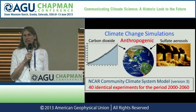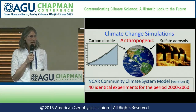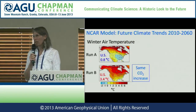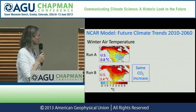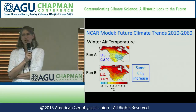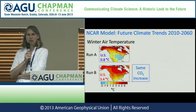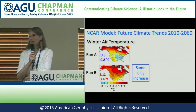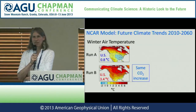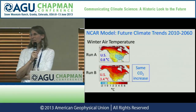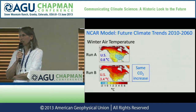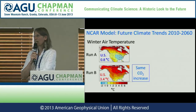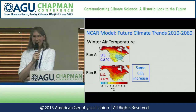Each one of these simulations could be the real world in the future. I'm going to show you two more extreme results from the set of 40. These are maps of the future change over the next 50 years in wintertime air temperatures over North America. Run A and Run B look very different despite both being forced with the same increase in greenhouse gases. Parts of the Southeast U.S. actually show a small cooling trend despite rising greenhouse gases, whereas Run B shows substantial warming, particularly over Canada and Alaska.